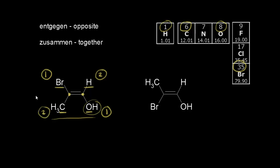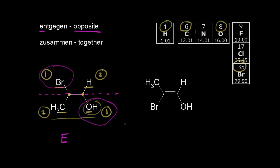I like to draw a line to think about the sides of our double bond. If our two higher priority groups are on opposite sides of the double bond, that is the E configuration. The E comes from the German word for opposite. So if the two higher priority groups are on opposite sides of the double bond, it's the E configuration.